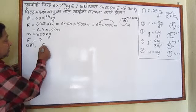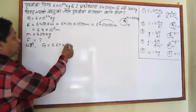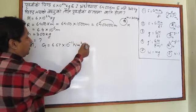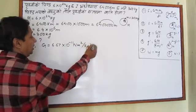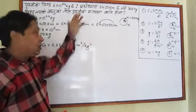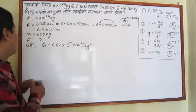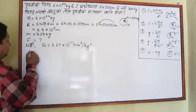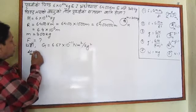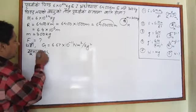G is capital Z equal to 6.67 into 10 to the power minus 11 Newton meter square by kg square. You have to write this. Now, using the formula — the sutra — we have a solution. We have the formula Q.